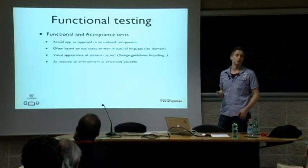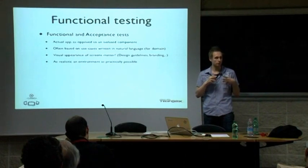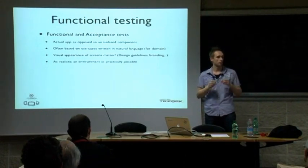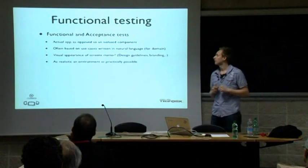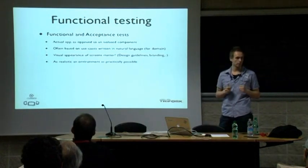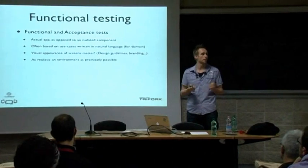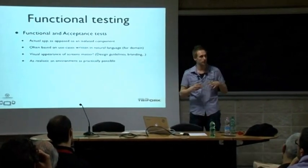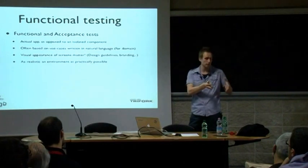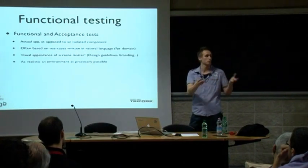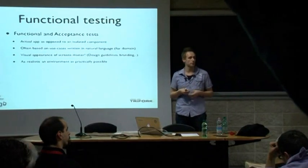So what do I mean by functional testing? Functional and acceptance testing are the same thing for this talk. As opposed to unit testing, when you're doing functional testing, you want to test your entire app — you don't want to isolate a class or a component. You want to test the real thing you're going to put in production. Often when you do this with a company, you have use cases written in natural language, in the language of the domain — so if I'm working in a bank, it uses concepts like accounts or bonds and stocks. When you do functional testing, you have a use case which says: if I do this, this, this, then this should happen.